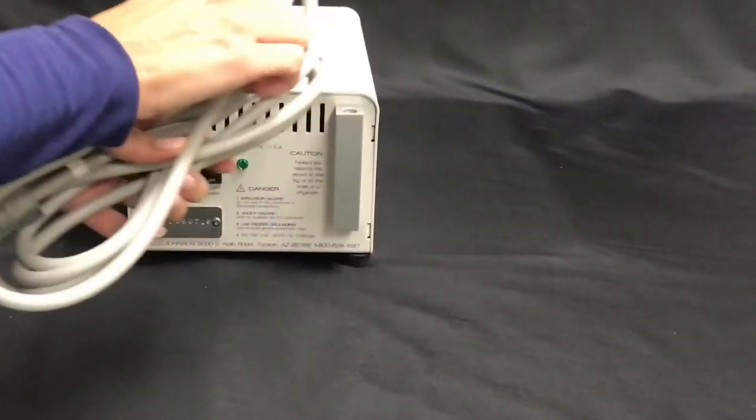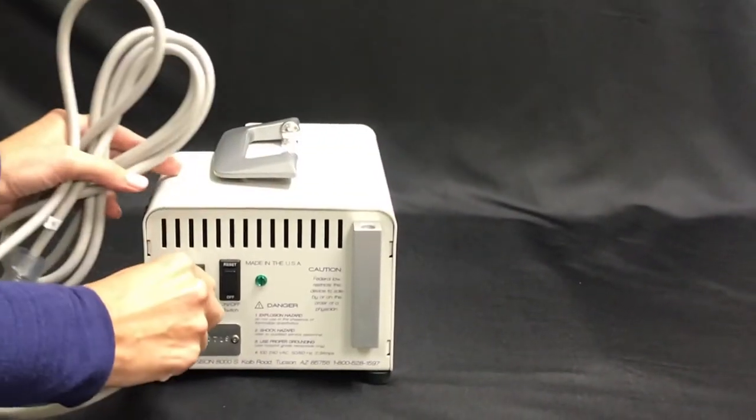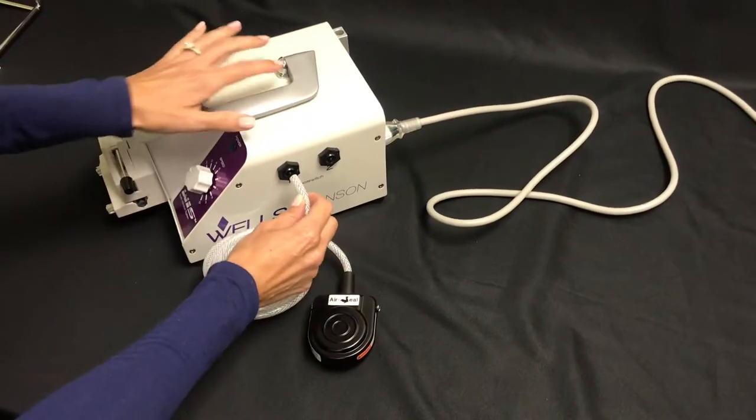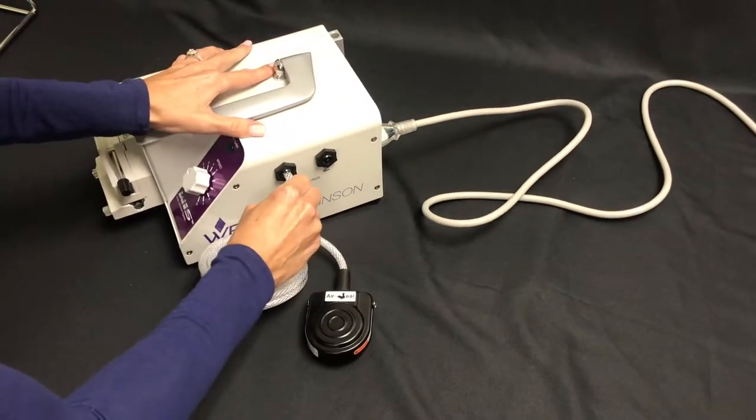To start, plug the power cord into the back of the infusion pump and plug into a power outlet. The footswitch can be connected to either hose barb on the side of the pump.